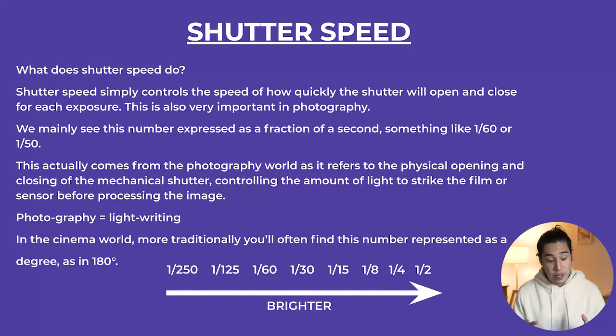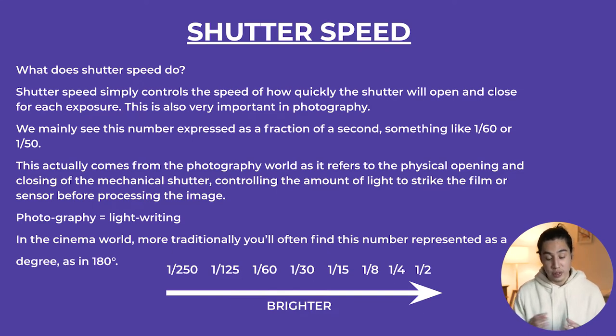Photography and cinematography overlap so much. Going from cinematography to photography is much easier, because it's quite literally a still of your moving image. We mainly see shutter speed expressed as a fraction of a second — something like 1/60th or 1/50th of a second. This comes from the photography world, as it refers to the physical opening and closing of the mechanical shutter, controlling the amount of light to strike the film or sensor before processing the image.